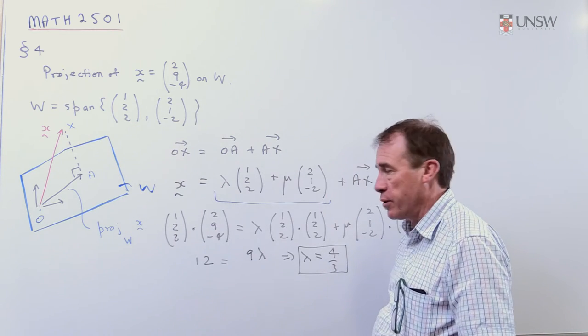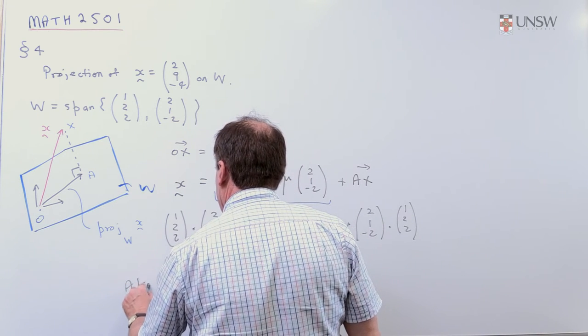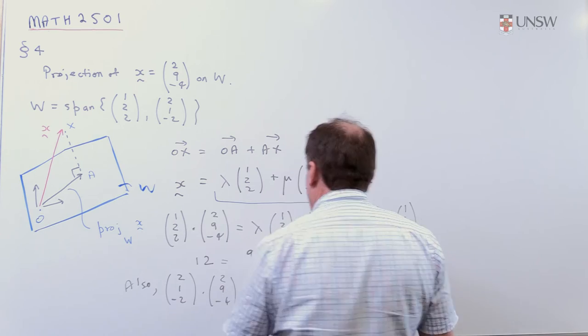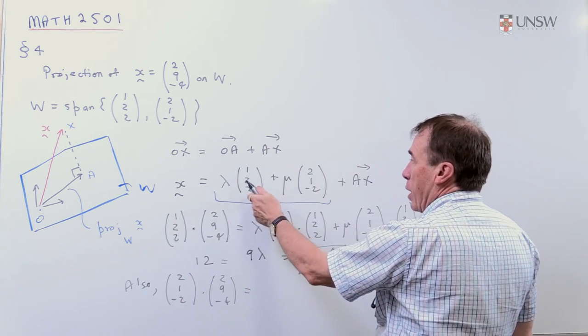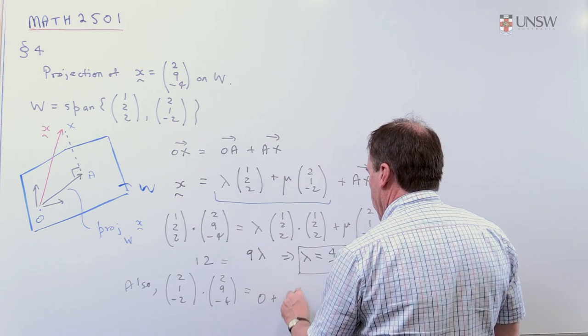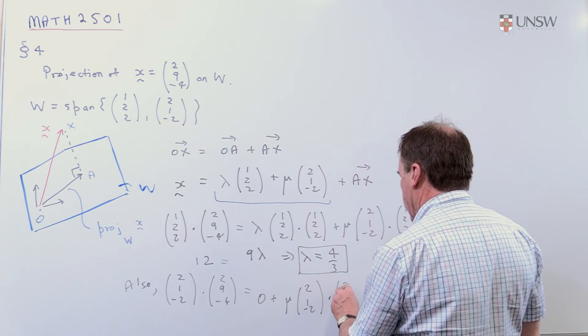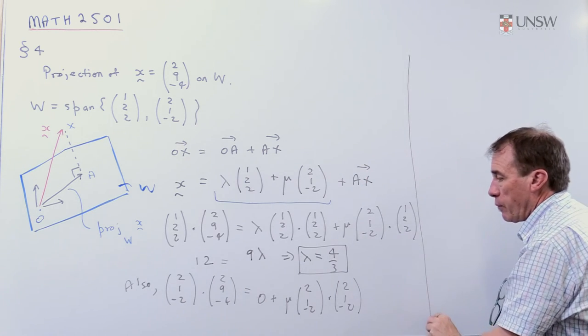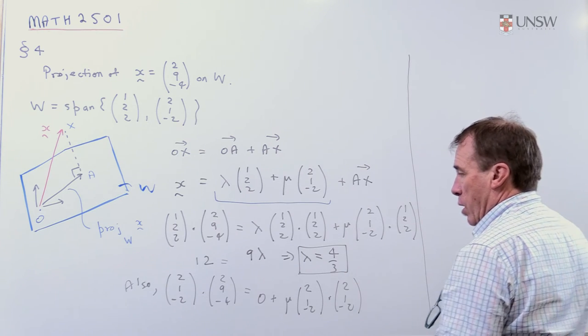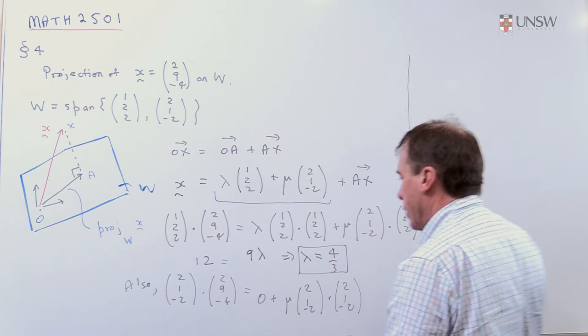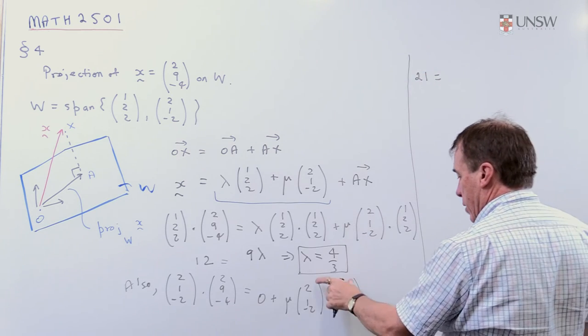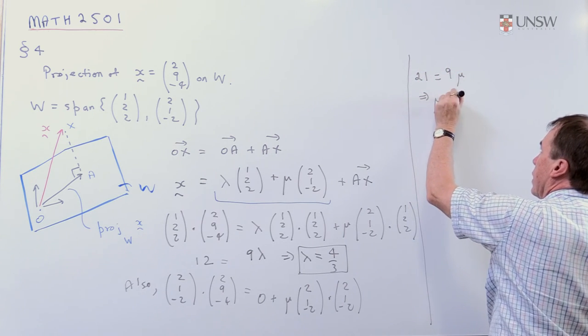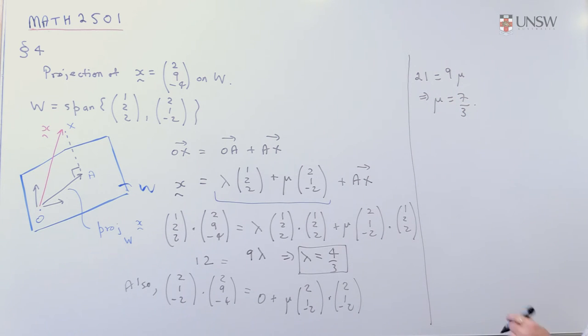So I'm also going to dot product (2,1,-2) on both sides. So that gives me, well, when I dot product this one with this one, I'm going to get zero. And I'm going to get mu times (2,1,-2) dot product with itself. And again, I'm going to get zero with this one because that's already orthogonal to it. Again, I'm going to do some arithmetic here. So I get, that's 8 and 9 is 17 and 4 is 21. And over the other side, I get 9 mu. And that tells me mu, then, is going to be 7 thirds.